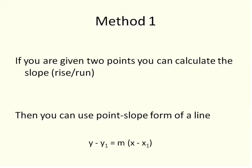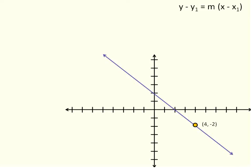Method number one: if you're given two points, you can always calculate the slope. It's the rise over the run, so you can use the slope equation, or you can just look at it and see how far it changes up and down. That's the rise. And then the run is how far it changes from left to right. Once you have the slope, you can use the point-slope form of a line. Let me demonstrate how you would do that.